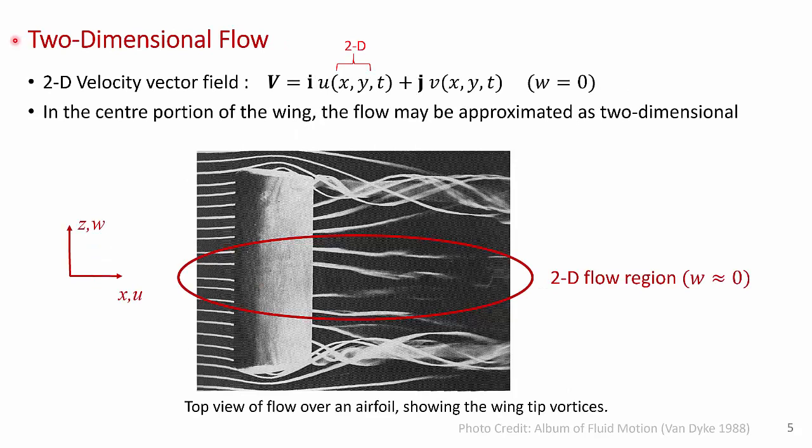You can also sometimes approximate a flow as two-dimensional. And here I've shown a two-dimensional velocity field representation where V has just u and v components, and they're only functions of x and y. So we have w equal to zero. And this sort of situation can happen in the center portion of the wing. This is the same arrangement as I showed in the previous slide, the same wing, but now we're seeing it from a top view. And so what you're seeing is at each end of the wing, you see these corkscrew vortices. This is the highly three-dimensional flow region. Well, as you approach the center portion of the wing, the w component of velocity in the z direction will go to zero. And you can approximate the flow in this region as two-dimensional.